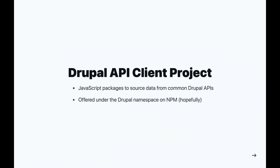What we're going to talk about is the Drupal API Client Project — just give an overview on what this is, why we're doing it, how we're approaching it, and if you're interested, how you can get involved. So what it is, is JavaScript packages to help you source data from common Drupal APIs. The dream is that this could be offered on the Drupal namespace on NPM, so under the @drupal org there could be an official client for talking to JSON API, which we don't have today.